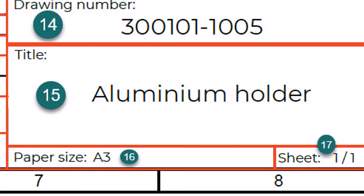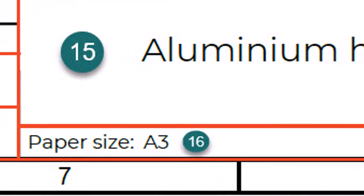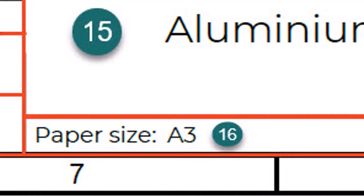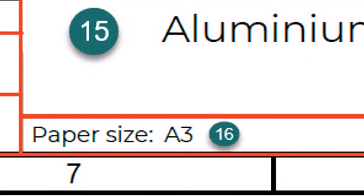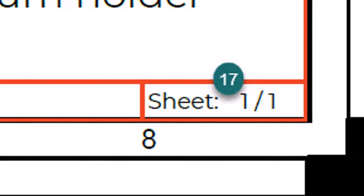Supplementary Title is used to add more information to the part — for example, the product family name or the assembly name for which the part is used. Paper Size refers to the paper size used for drawing creation. Sheet Number: in reality, some parts are fairly complex to fit on just one sheet, so depending on the paper size used, a drawing can contain many sheets — the current sheet number should be displayed. Number of Sheets represents the final number of drawing sheets.